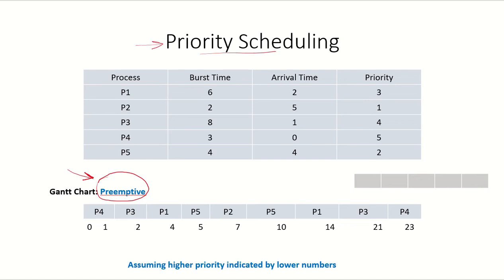Let's take an example now. There are 5 processes in the system. The burst time, the arrival time, and the priority of the processes are given. We are assuming that higher priority is indicated by lower numbers. That means P2 is having the highest priority of all these given processes.